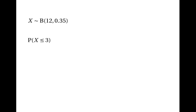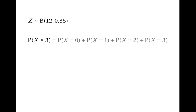Suppose we want to know the probability that X is less than or equal to 3 — that's the probability of getting three or fewer successes. The only way of calculating this using the formula is to add together the probabilities for 0, 1, 2 and 3 successes.